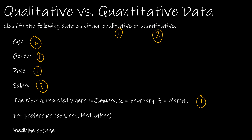Pet preference — dog, cat, bird, other — is of course qualitative because it is a category. Medicine dosage is a number; we're measuring the degree or amount of something, and that is quantitative.